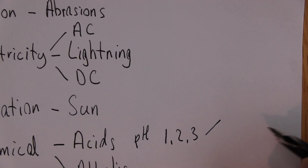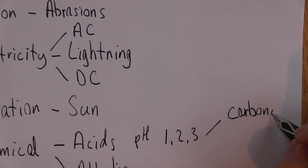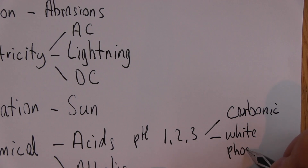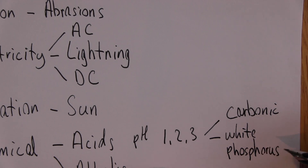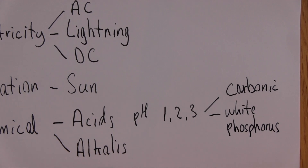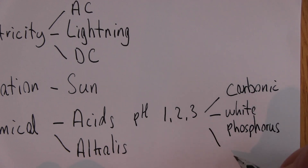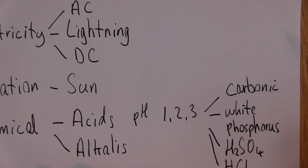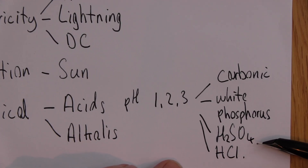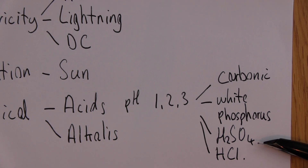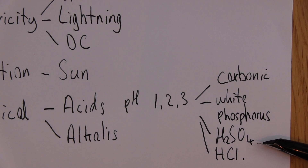Examples of acids include carbonic acid, white phosphorus — thankfully rare — and more commonly sulfuric acid (H2SO4) and hydrochloric acid. Sulfuric acid is battery acid and is quite a common one, as you may have come across patients who've been victims of acid attacks, where sulfuric acid is often used.